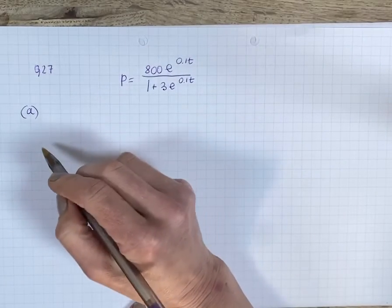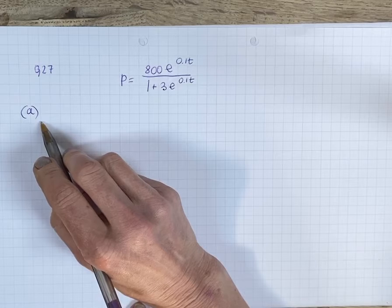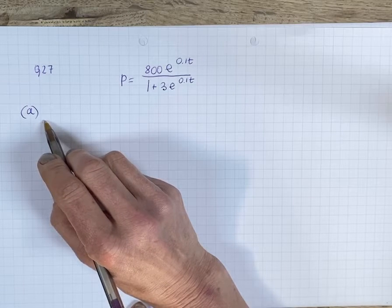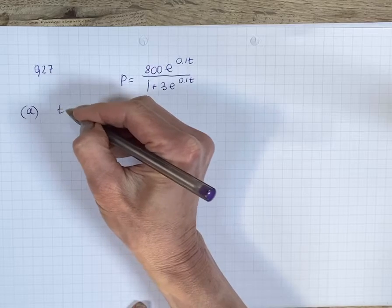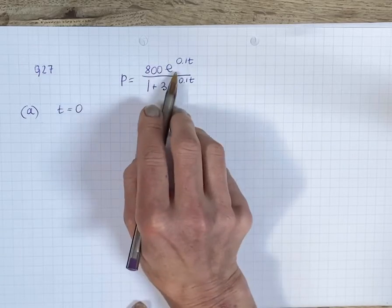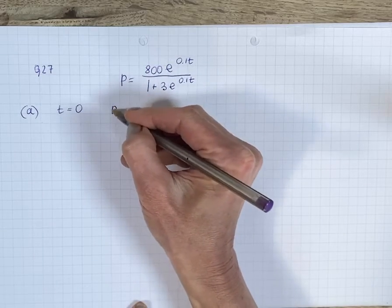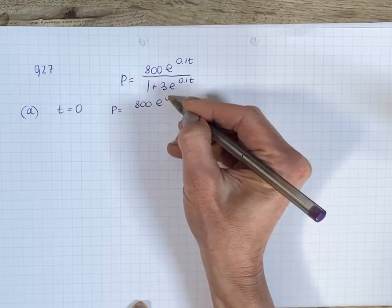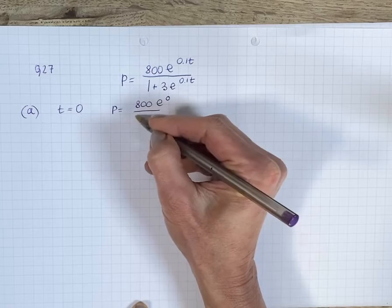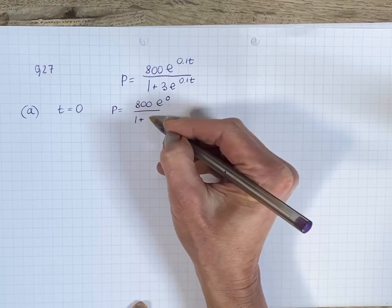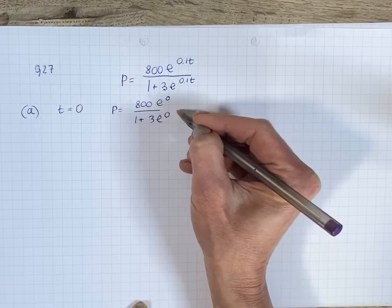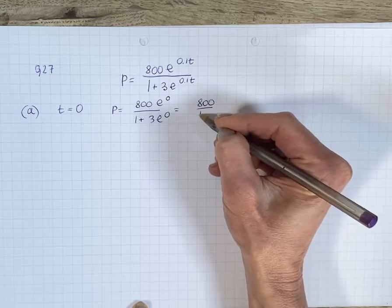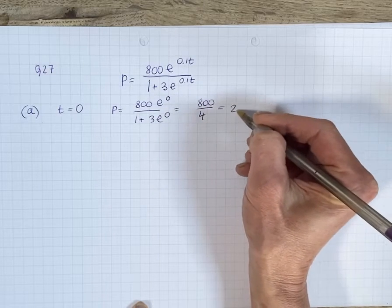Okay, so part a: calculate the number of primroses at the start of this study. So at the start of the study, t is equal to zero. You just need to substitute t equals zero and you get 800 e to the power of zero, which will go to 1, over 1 plus 3 e to the power of zero. So you have 800 over 1 plus 3, which is 4, so it's going to be 200.